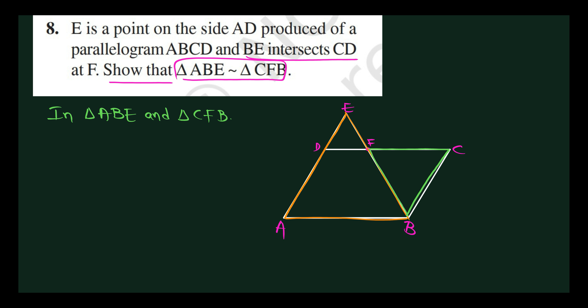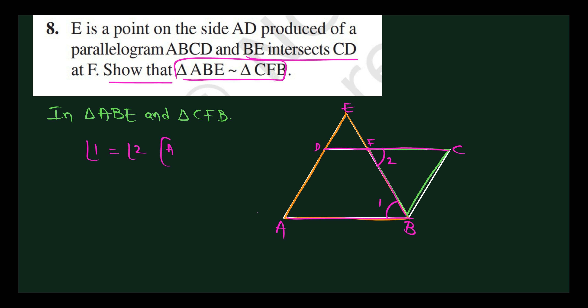Angle 1 is angle ABE and angle 2 is angle CFB. These two are alternate interior angles between the two parallel lines. So angle 1 equals angle 2. These are alternate interior angles.